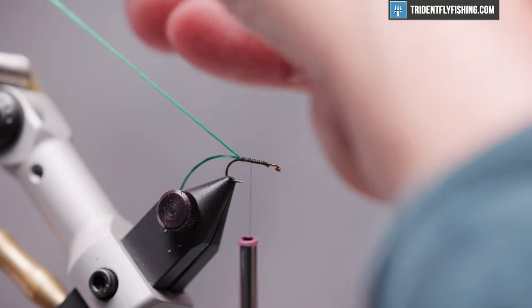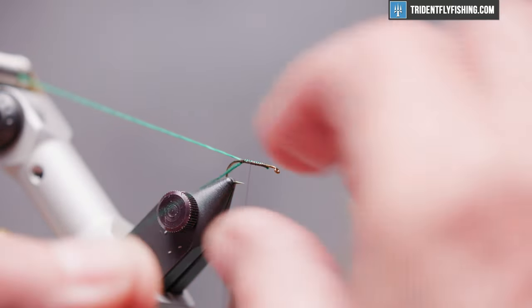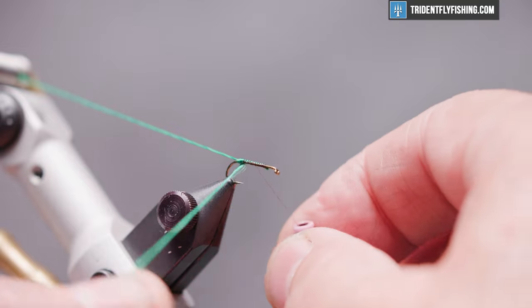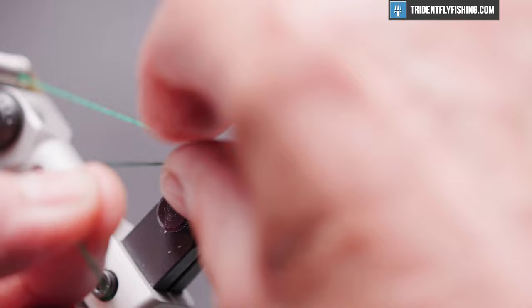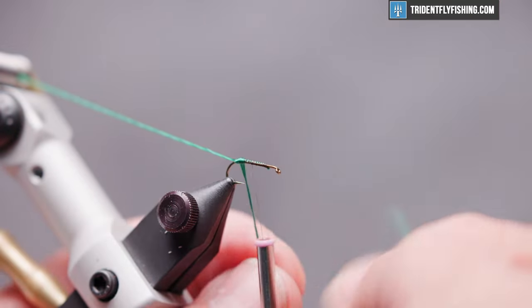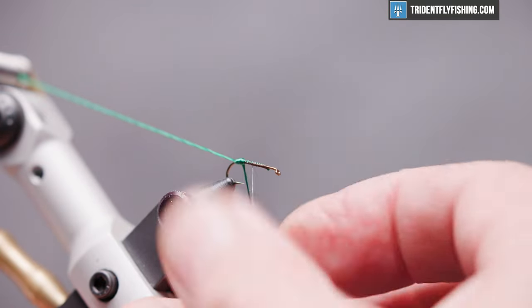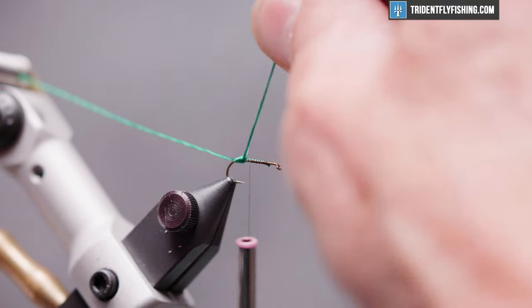And we'll leave one strand behind. And we'll take one strand and form our egg sac by making four or five turns back and then some turns back up to where we started. Like so.